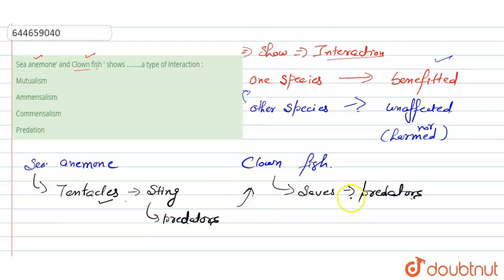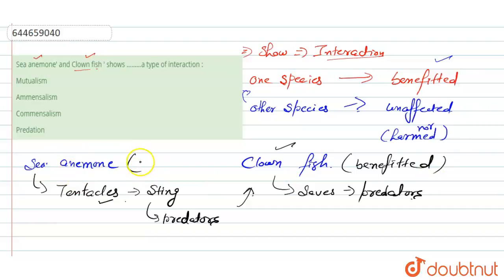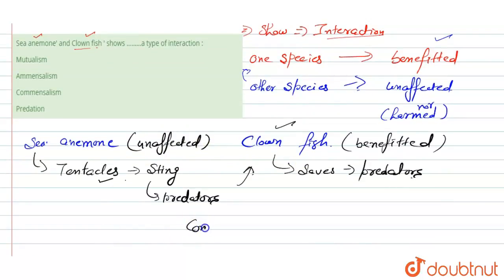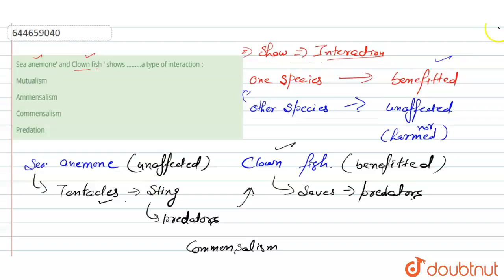In this relationship, the clown fish gets benefited by the sea anemone, whereas the sea anemone in return gets nothing — it remains unaffected. So this kind of interaction is termed as commensalism. The right answer for this question is commensalism.